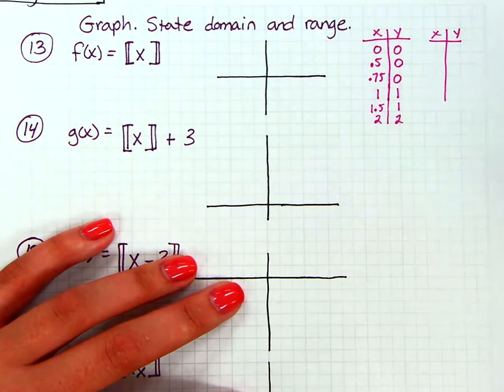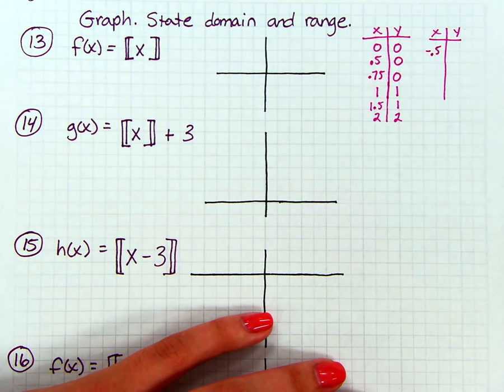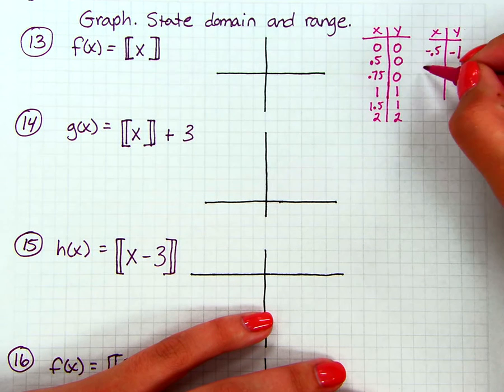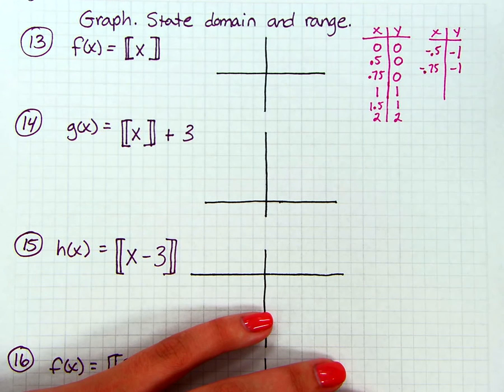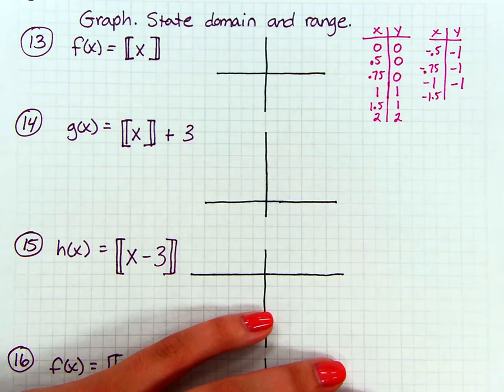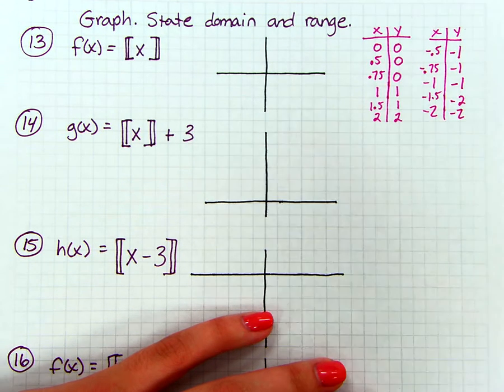So if I choose a negative number, so again let's start out with maybe negative 0.5. So again, we're rounding to the left, so that's going to give us negative 1. Same thing, negative 0.75, that's still going to round to negative 1. So my next change, let's see, even negative 1, that's going to give us negative 1. So if I choose negative 1.5, well that's going to round to negative 2. So again, if I choose negative 2, that will also give me negative 2. So it looks like my changes are going to happen at the integers.